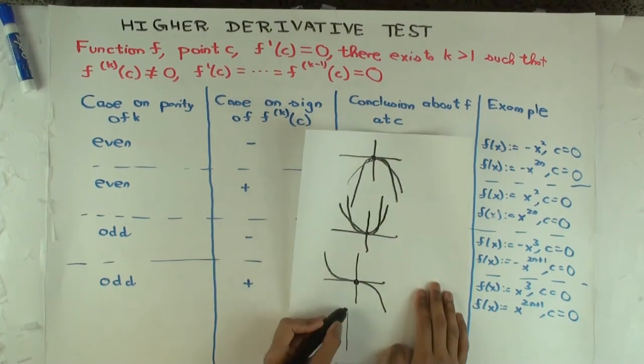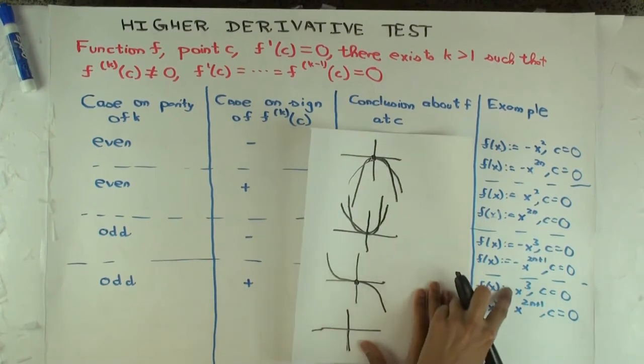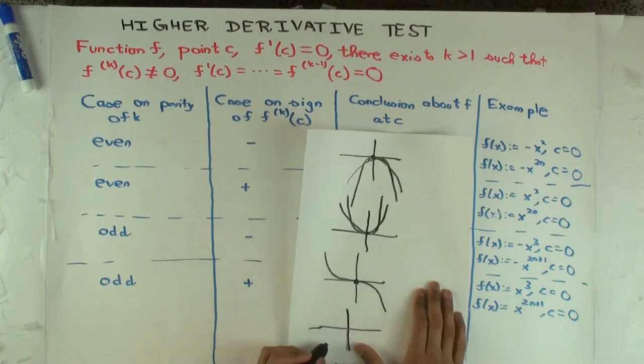What is the final case we have? Odd and positive. What's some examples for odd and positive? X cubed. You could also take something bigger. What's a bigger power here? X to the fifth. Let's look at X to the fifth. How many times do you need to differentiate that to get a non-zero value at C equals zero? And what's the value of the fifth derivative? 120. That was some quick math there.